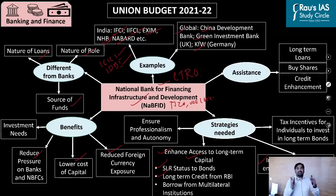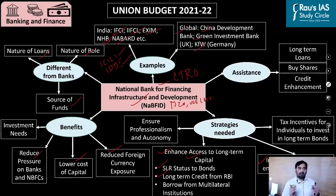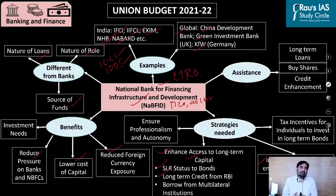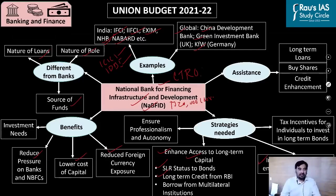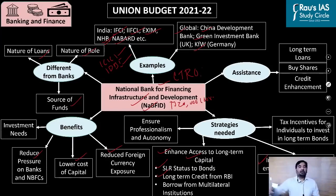The banking sector in India is dominated by public sector banks, which own more than 70% of banking assets. Due to this monopoly, public sector banks are considered less efficient due to lack of competition. We need to infuse competition into the development banking space as well — by allowing the private sector to set up development banks, giving infrastructure companies the option to borrow from both government-sponsored and private-sponsored development banks.